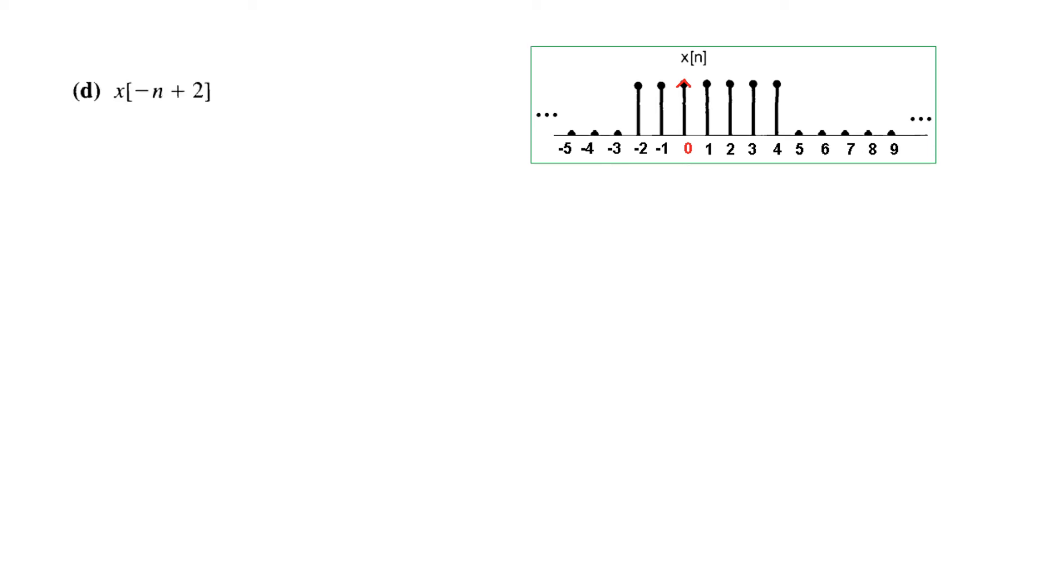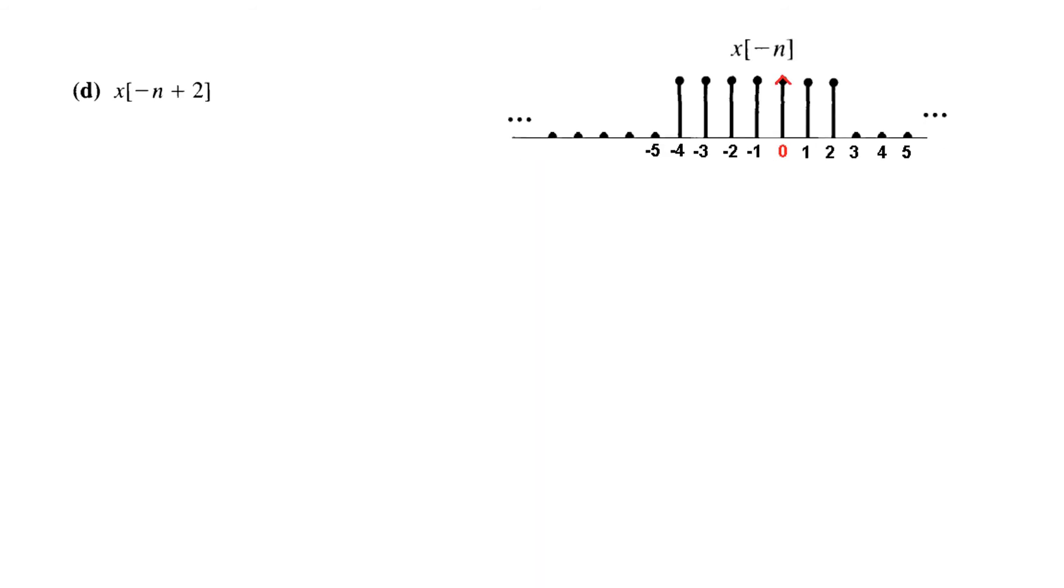Now, x[minus n plus 2]. Now, it is minus n. That means we will not be using this signal x[n] rather we will be using x[minus n] signal that we already found. So this is x[minus n] signal.